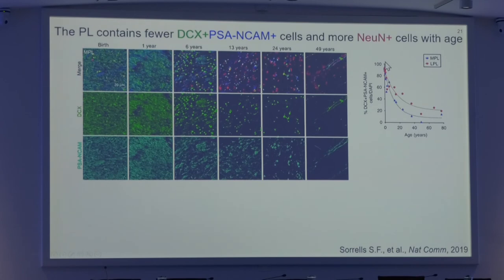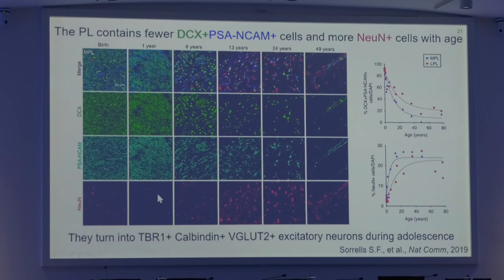We did something similar to what we did for the dentate gyrus and followed the decline of doublecortin PSA-NCAM immature neurons. We found that the maturation of these immature neurons is somehow protracted during life, occurring mostly during adolescence. At birth, most of the cells in the paralaminar nucleus are immature doublecortin PSA-NCAM cells. This population rapidly declines and matures mostly during adolescence, with a plateau of about 20 to 30 percent immature neurons in adult stages. Correspondingly, the number of new mature neurons increased in a matching pattern during the same ages. We characterized the molecular phenotype of these neurons and found that they turn into TBR1, calbindin, VGLUT2 excitatory neurons.